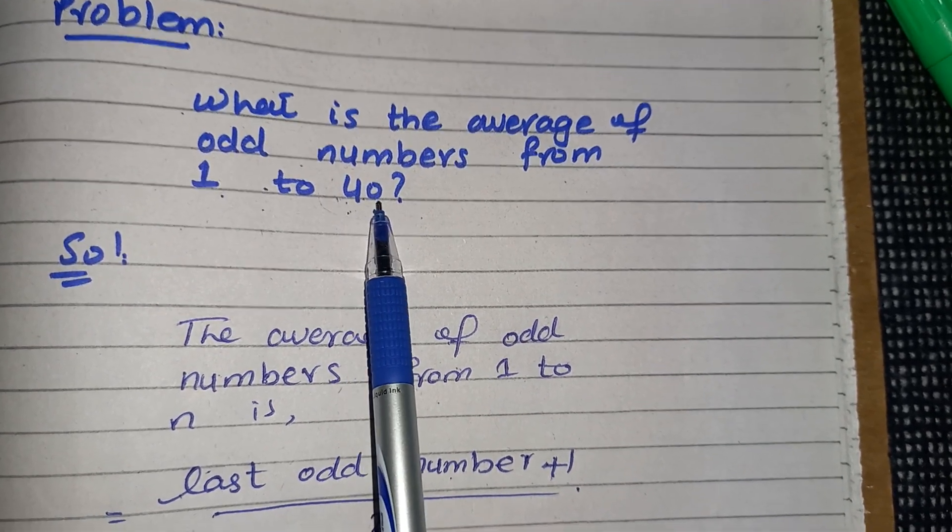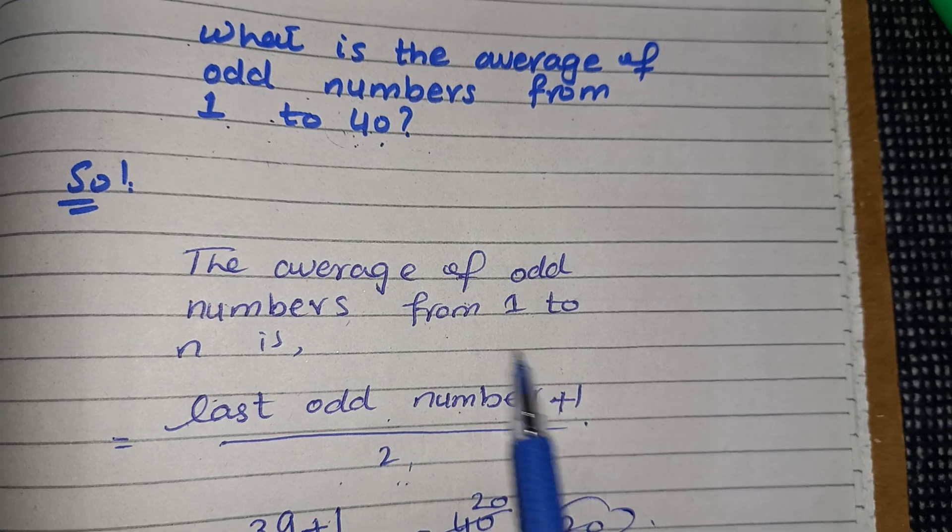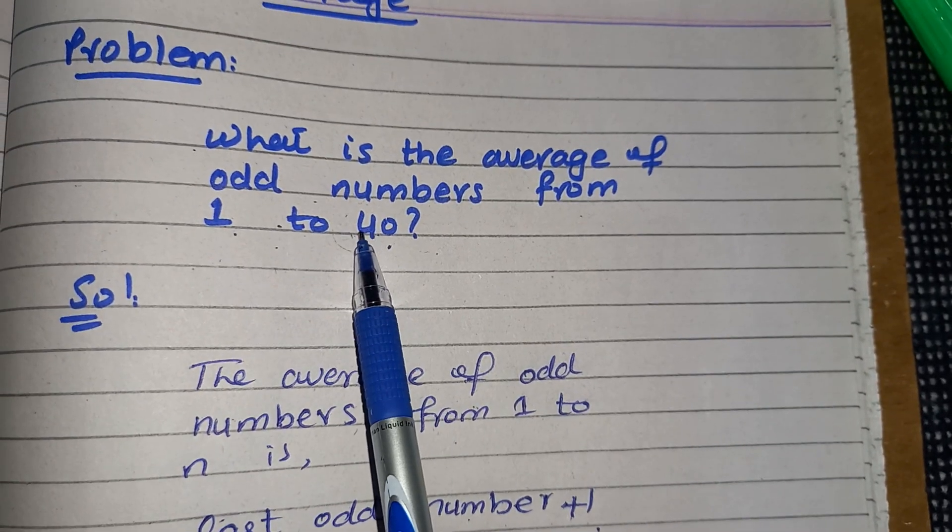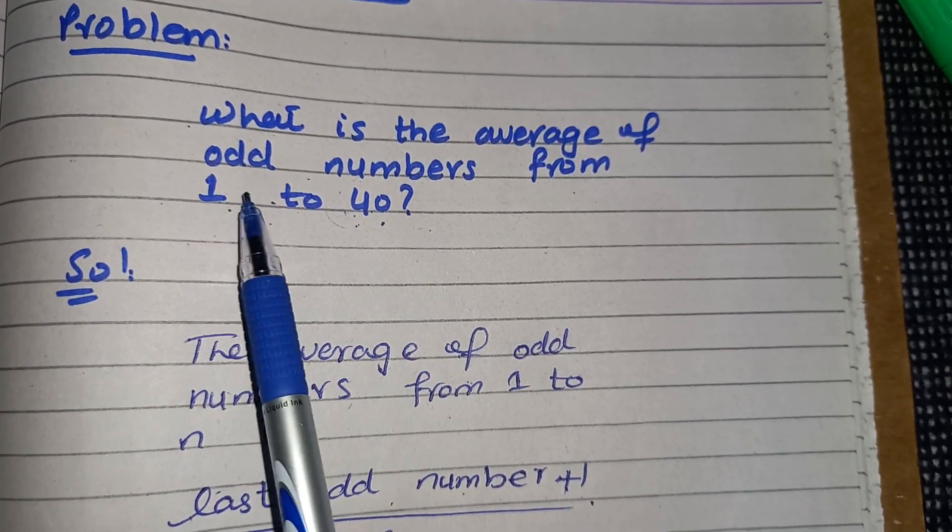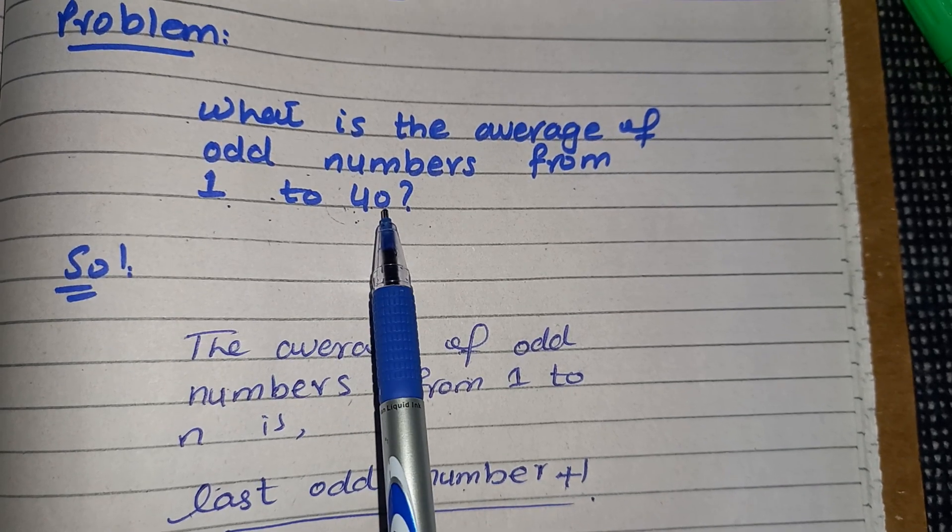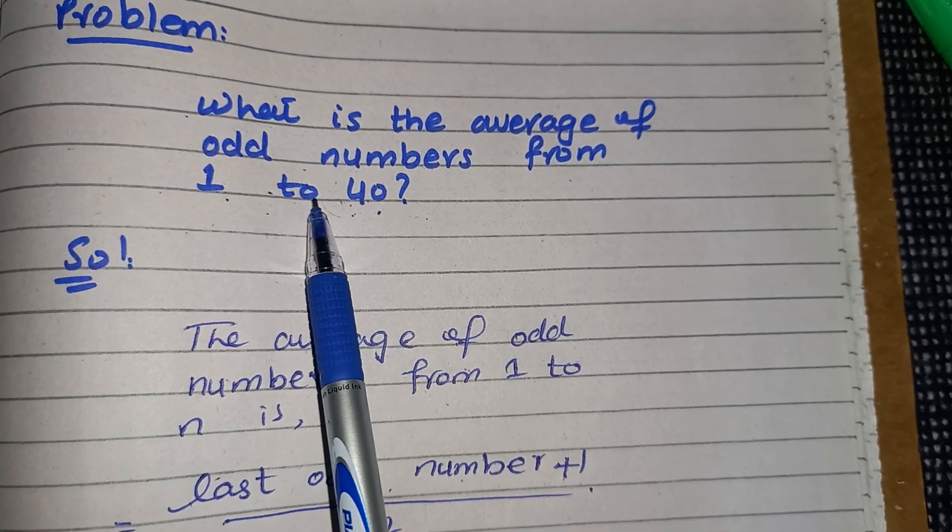So we can't write 40 over here because we have to take the last odd number, and that number is 39. We can't take 41 because we have to find the odd numbers between these two values, so we will take the previous number, which is 39.